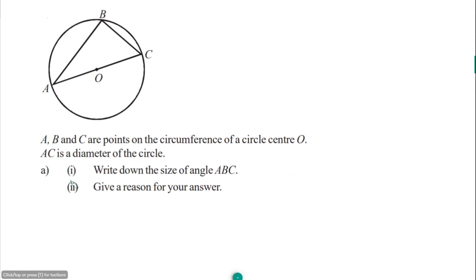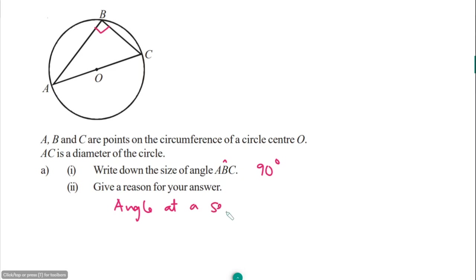We have a diagram where A, B, C are points on the circumference of a circle with center O, and AC is a diameter. Question a asks for the size of angle ABC. Since AC is a diameter and B is on the circumference, this angle is on the semicircle, so angle ABC has to be 90 degrees. The reason is: the angle in a semicircle is a right angle, equal to 90 degrees.